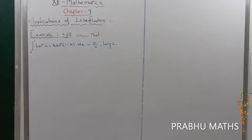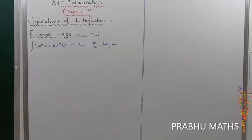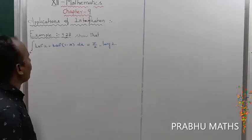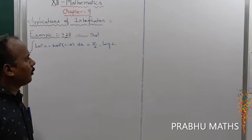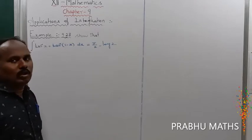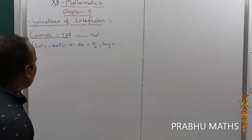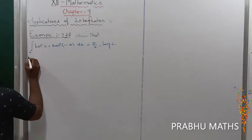Example 9.28 showed that integral 0 to 1 of tan inverse of x plus tan inverse of (1 minus x) dx is equal to pi by 2 into log 2. So first of all, the solution.